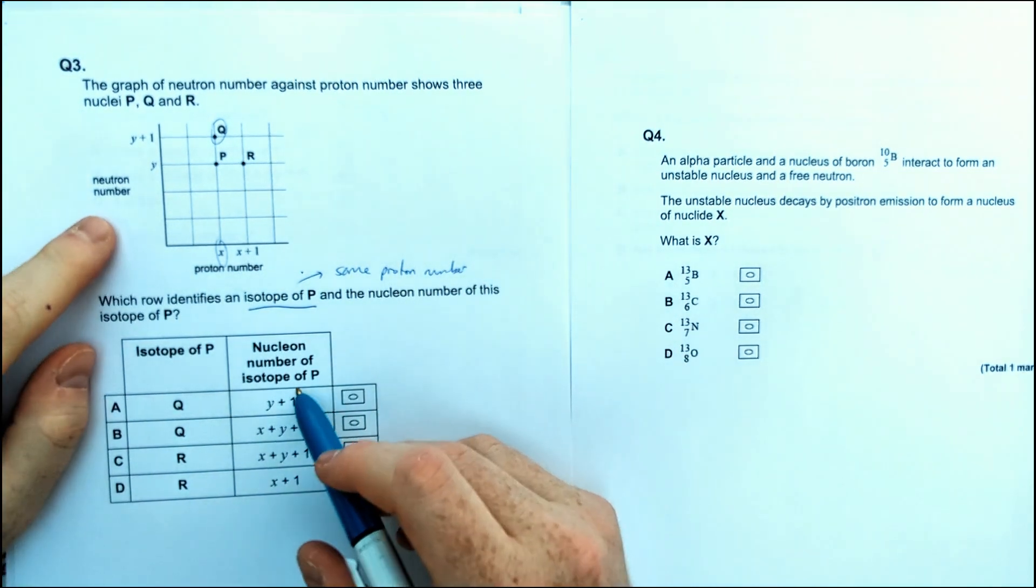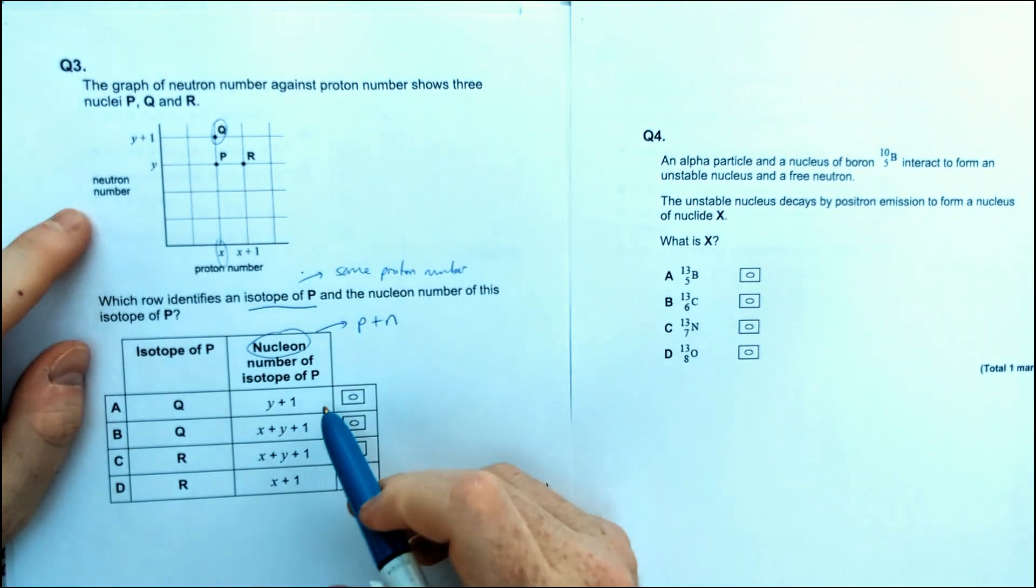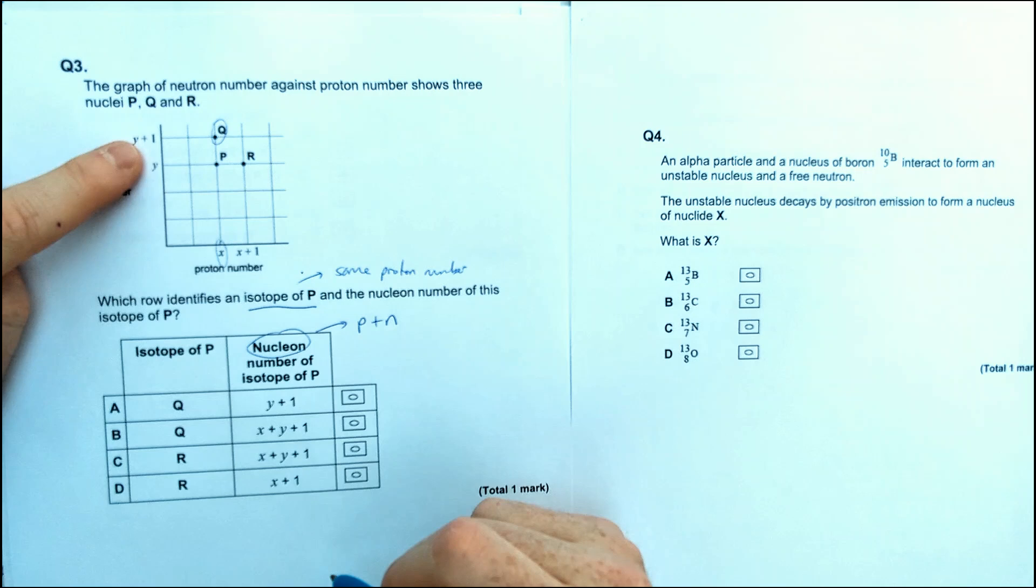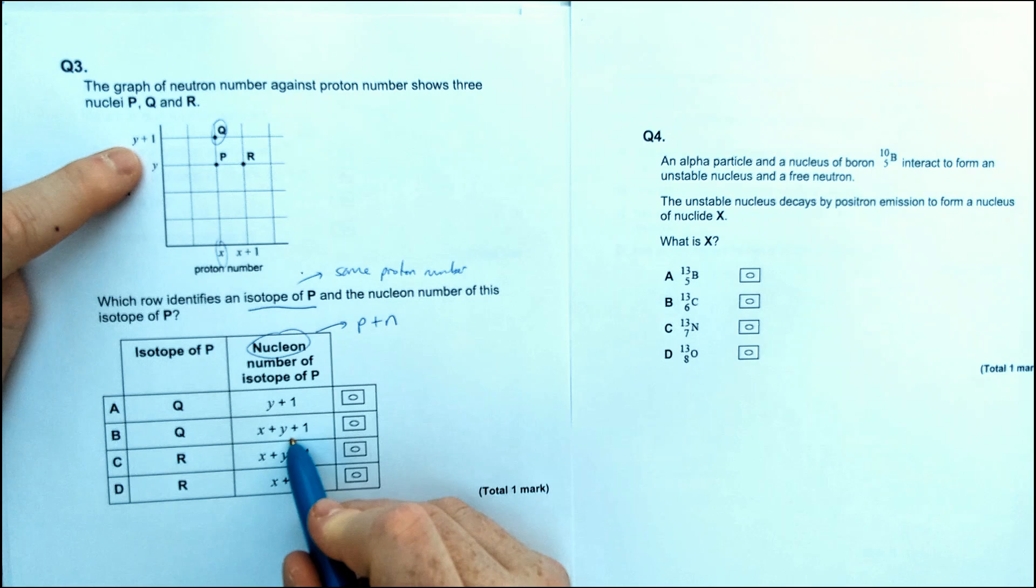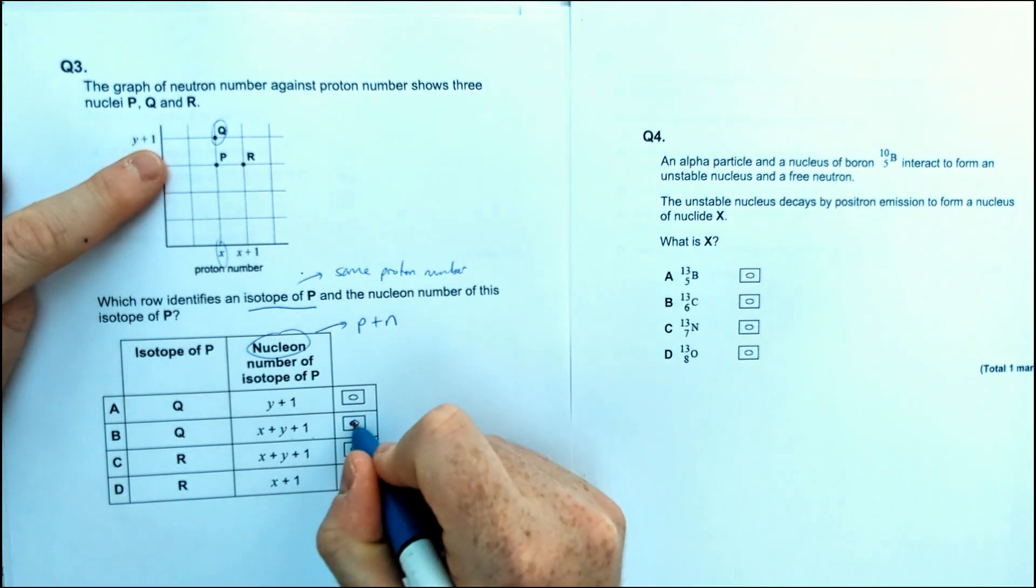So only looking at Q, so the nuclear number of an isotope, let's have a look at the total nucleons, which would be protons plus neutrons. So if we've got Q, it's got a neutron number of plus 1. So therefore, we are just going to have to add to X plus Y plus 1 because we've got an extra 1 in the graph here, meaning it's option B.